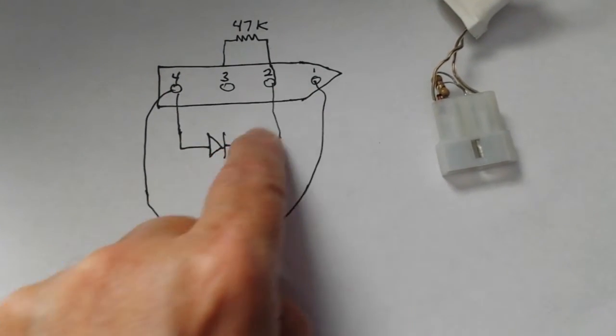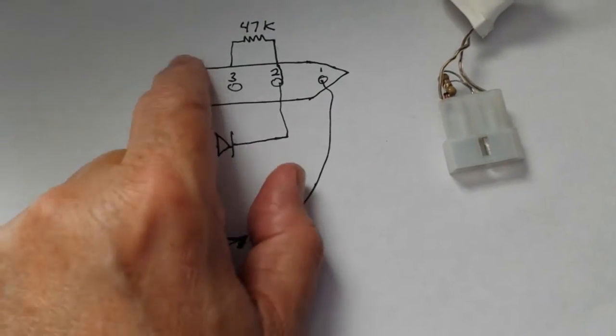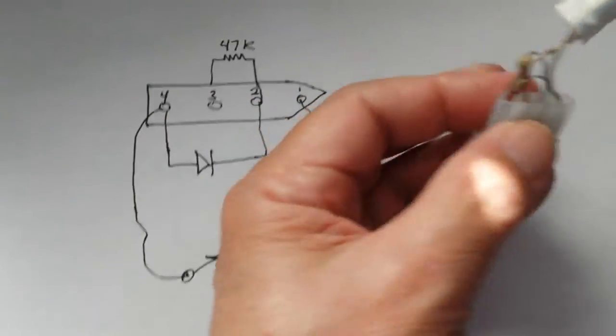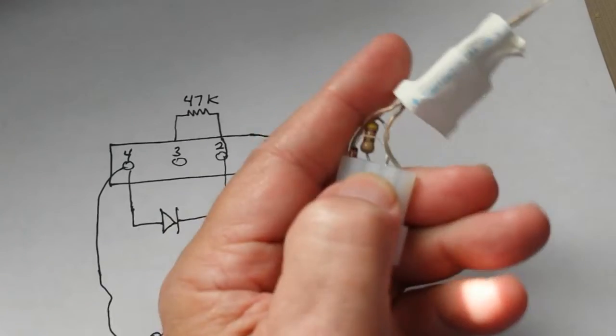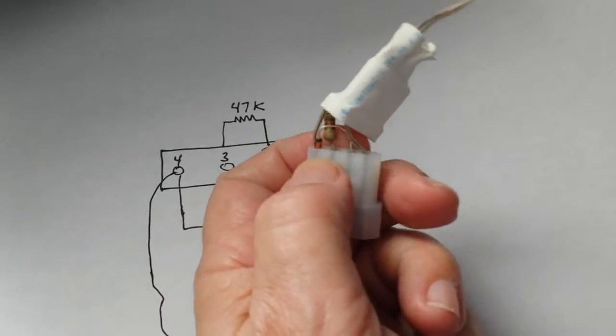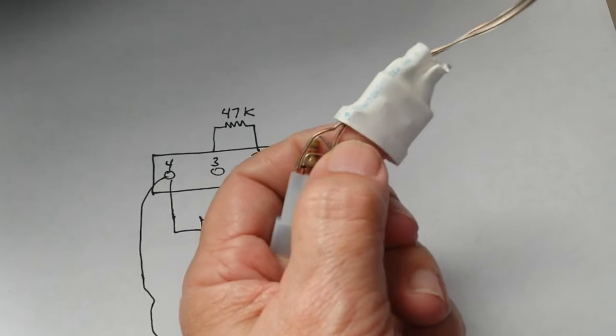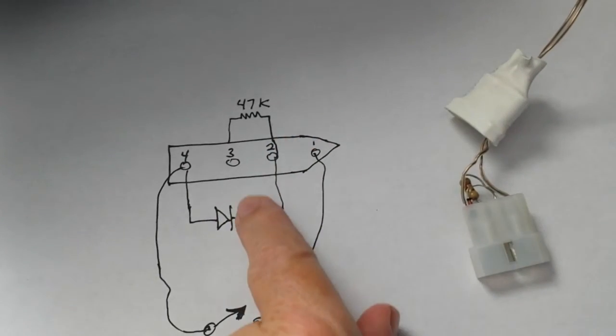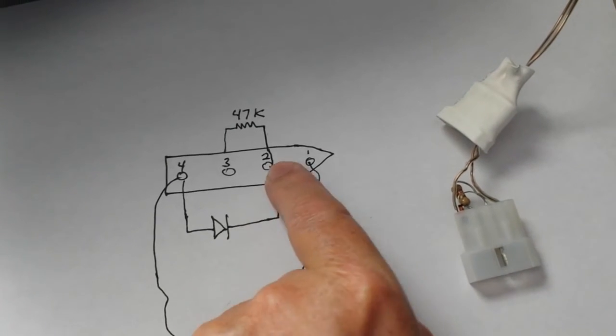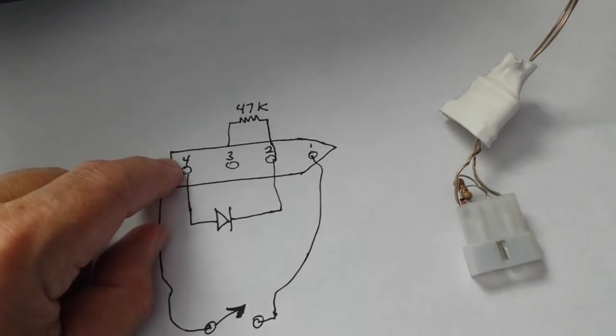We have a switching diode which is just a simple 1N148 type diode. Looks like this. See the little black band? The black band is your cathode. That's your connector. The right side here that we're showing goes to pin 2. The anode goes to pin 4.